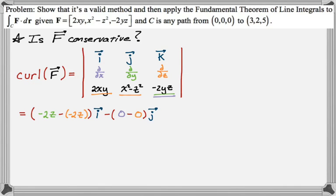Now I need the k component. It's plus. Cross out the first row, the last column. I need partial x of x squared minus z squared, which is 2x, minus partial y of 2xy, which is 2x. That's our k component. Overall, we get zero, zero, zero, the zero vector, which means our curl is zero. Therefore, our vector field is conservative.